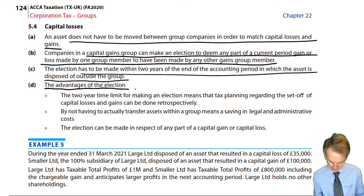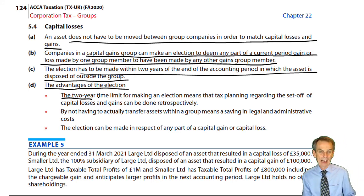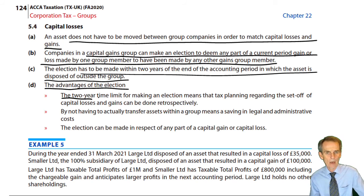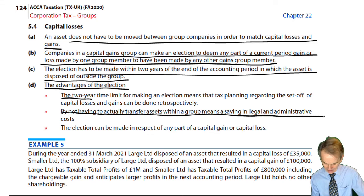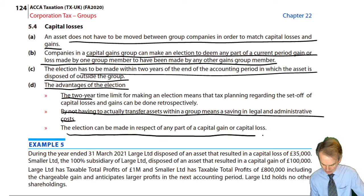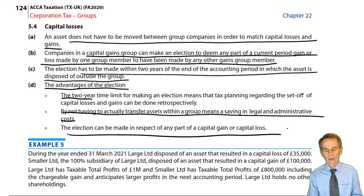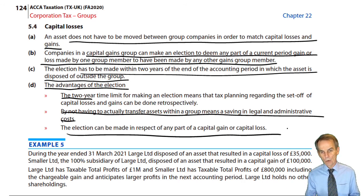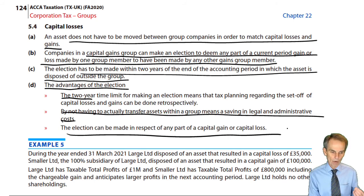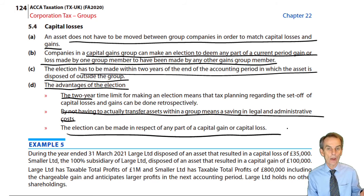The advantages of the election: the two-year time limit allows us to find all the information we need for the accounting period and then make this election retrospectively. By not having to actually transfer assets, there's a saving in both legal and administrative costs. The election can be made in respect of any part of a gain or capital loss. The primary objectives are to match gains with losses and to move gains out of companies that would otherwise have been large, into companies where even with the inclusion of that extra gain they still have profits less than the profit limit.